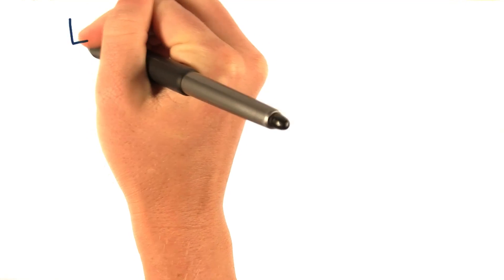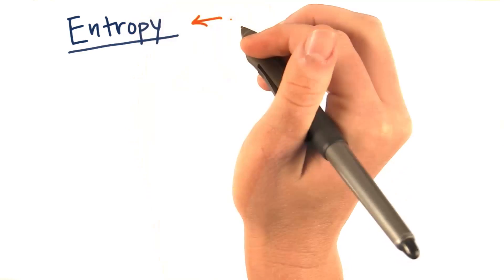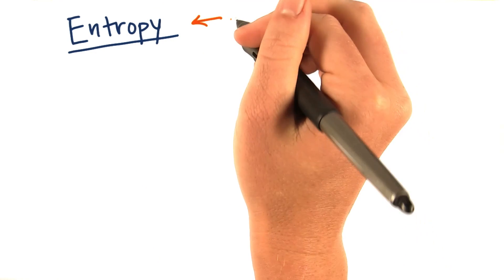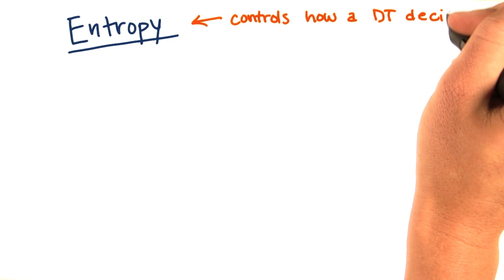Now we're going to talk about something that's very important for decision trees, and that is entropy. Entropy is basically the thing that controls how a decision tree decides where to split the data.